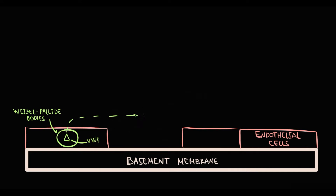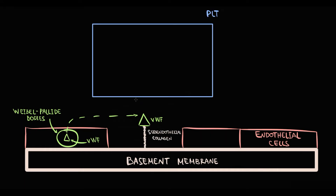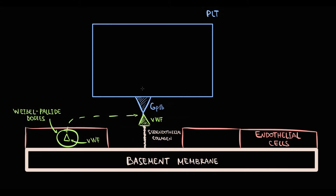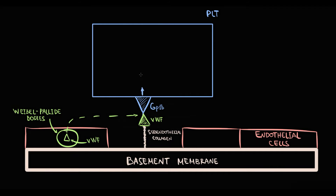In the bloodstream, von Willebrand factor binds to subendothelial collagen under the disrupted endothelial cell. After that, platelets come to the site of injury and by the specific receptor GP1B they bind to von Willebrand factor. This step is called platelet adhesion. After adhesion, platelets become activated.